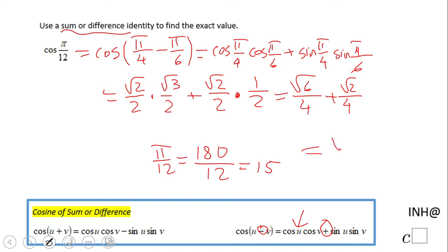The final answer will be square root of 6 plus square root of 2 over 4, and that's it. If you enjoyed the video, don't forget to click the like button and come back to C squared for more help. Thank you.